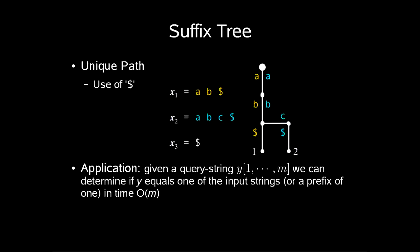String must have a unique root to leaf path. Therefore each suffix must end with a special character. In these examples I will use the dollar sign. Now, given a query string y from 1 to m, we can determine if y equals one of the input strings or a prefix in order m time.